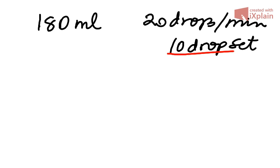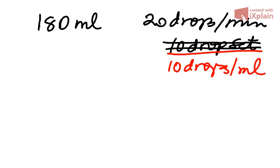First thing we do here is we translate what 10 drop set means. It's 10 drops per mL. So we don't need that information there anymore. We just concentrate on the 10 drops per mL.